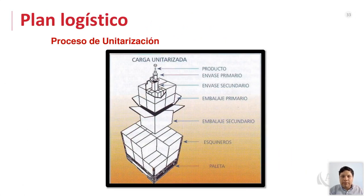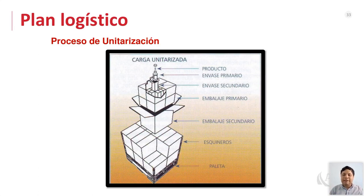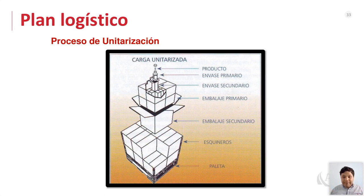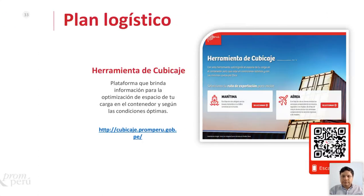Existe una herramienta de cubicaje de PromPerú para exportaciones marítimas y aéreas, donde puedes medir si teniendo un empaque de ciertas medidas, cuántos productos entran en un container. Es importante calcular el tamaño del container y el tamaño de la paleta para adecuar correctamente el tamaño de tus cajas. Hay dos tipos de exportaciones: la tradicional, donde adquieres todo el container para ti solo; y la consolidada, donde compartes el container con otra empresa. La consolidada tiene menores costos logísticos, pero implica riesgos porque no sabes con quiénes compartes ni qué ruta harán.